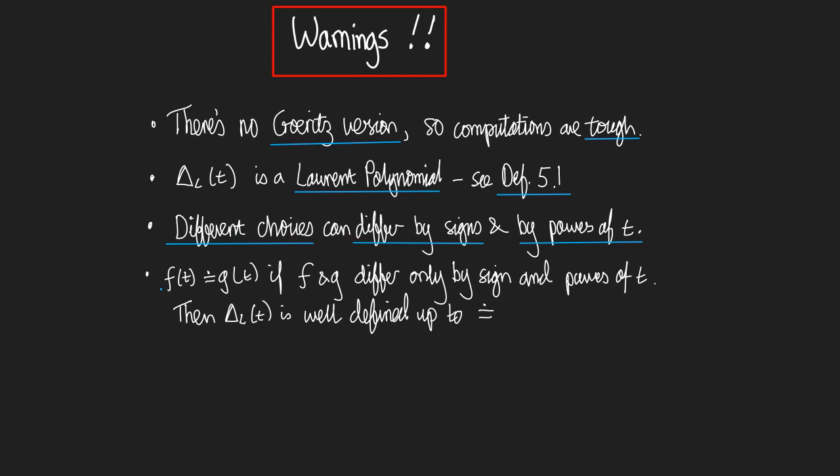It's not well defined up to equality. And so to deal with this we introduce the following notation. We say that two polynomials are equal dot, see the equals has a dot over it, if they differ only by a sign and only by powers of t. And then with that definition it turns out that the Alexander polynomial is well defined up to this equal dot. So that's the end of the mini-lecture.